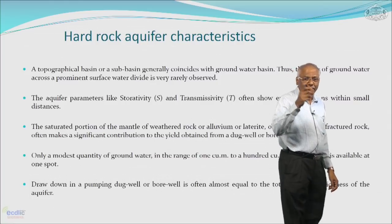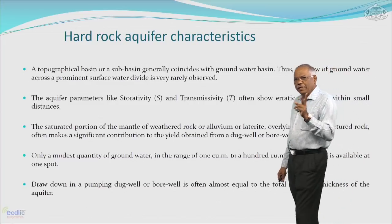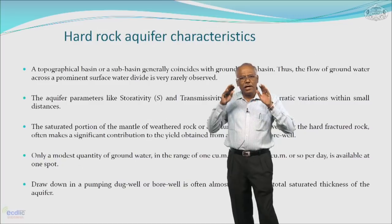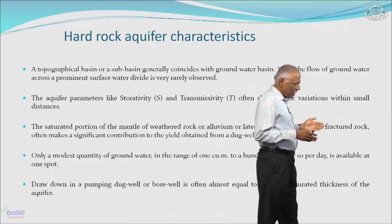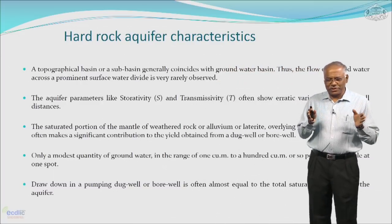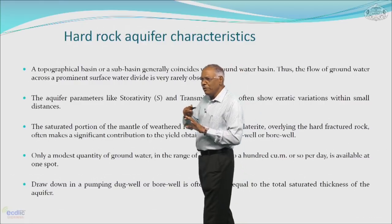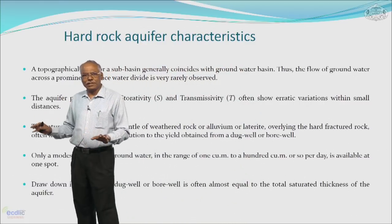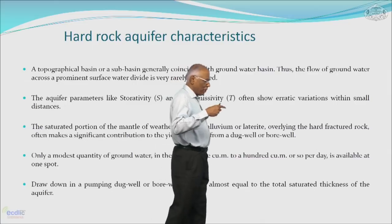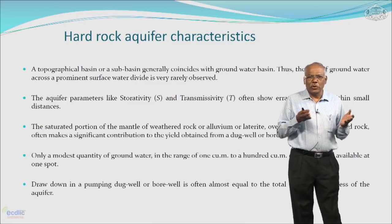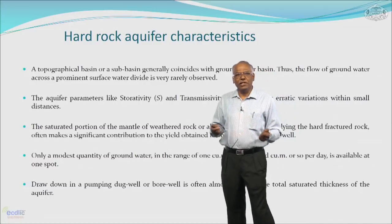These characteristics are narrated in this particular picture. Basically, the storativity and transmissivity properties often show large variation in hard rock aquifers over a small distance, because fractures, pores, fissures, cracks, or joints present in hard rocks are not uniformly present across a spatial scale, nor vertically. This needs to be understood because without sufficient storage and transmission properties of the aquifer, we cannot exploit ground water in economical quantities.